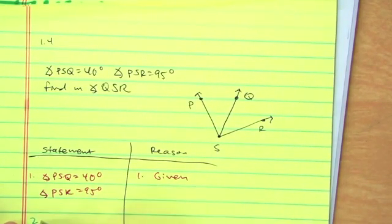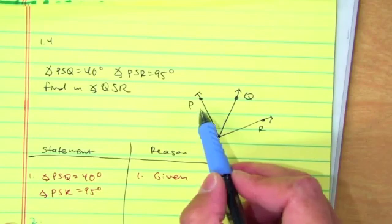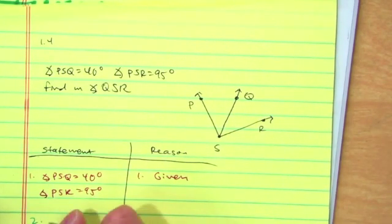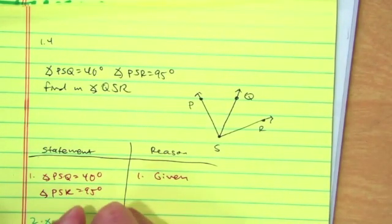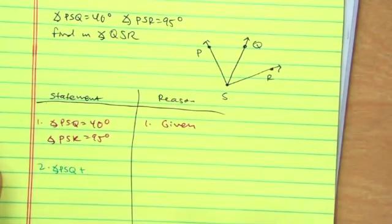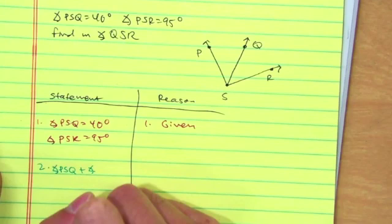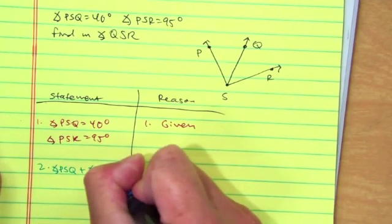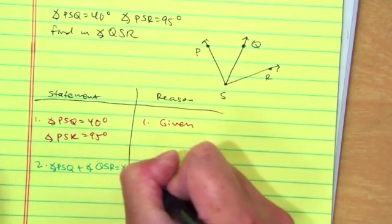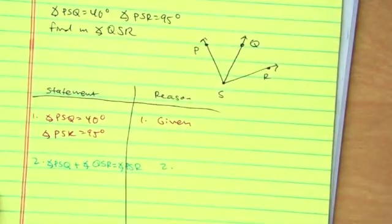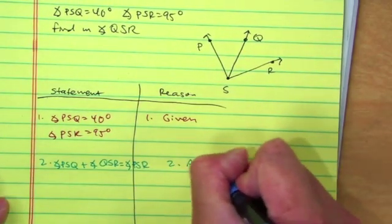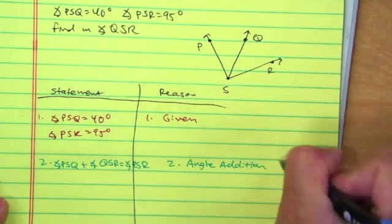Number two. Let's use these angles. How can I add the smaller angles and the bigger angles? So angle PSQ plus angle QSR equals angle PSR. Why? What is it, class? Angle addition postulate. Excellent.